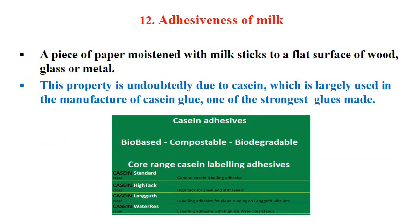Another property is the adhesiveness of milk. A piece of paper moistened with milk sticks to a flat surface of wood, glass, or metal, demonstrating its adhesiveness. This property is undoubtedly due to casein, the protein which is largely used in the manufacture of casein glue — one of the strongest glues in industry. Low-quality protein from milk can be converted into glue, used as an adhesive in industry, similar to how gelatin is made from good-quality protein.